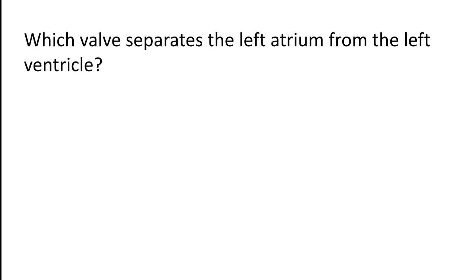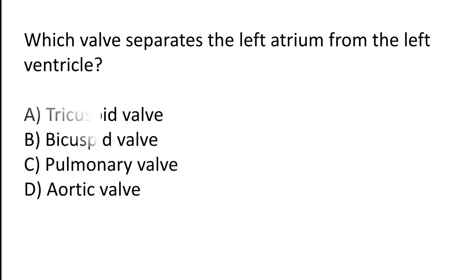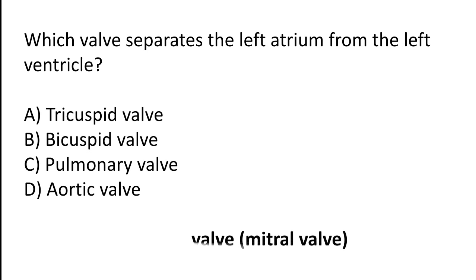Which wall separates the left atrium from the left ventricle? A) Tricuspid wall, B) Bicuspid wall, C) Pulmonary wall, D) Aortic wall. The correct answer is option B. Bicuspid wall or mitral wall separates the left atrium from the left ventricle.